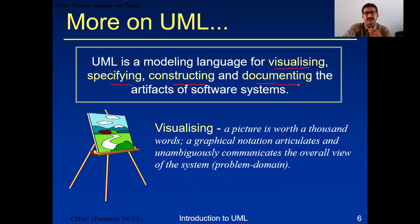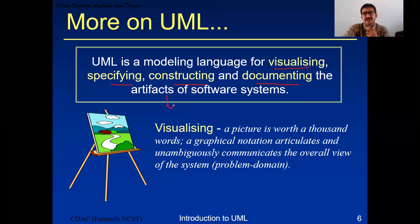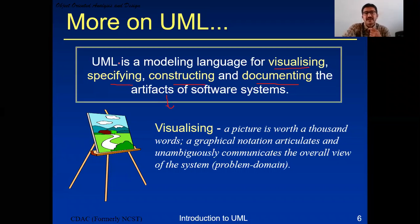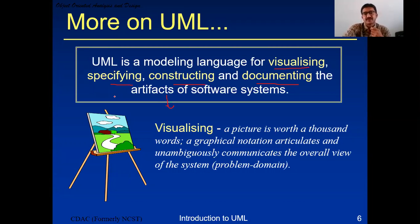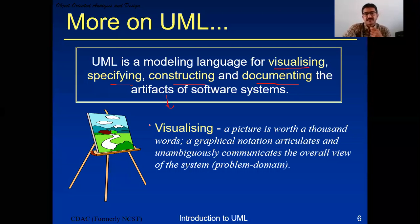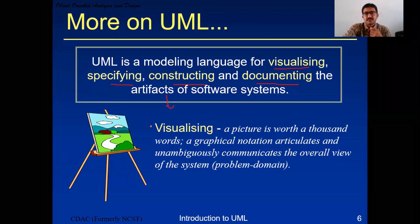More about UML: UML is a modeling language for visualizing, specifying, constructing, and documenting the artifacts of a software system. You may have a doubt about what an artifact is - an artifact is a small sort of prototype of the software system that you want to draw with the help of UML.